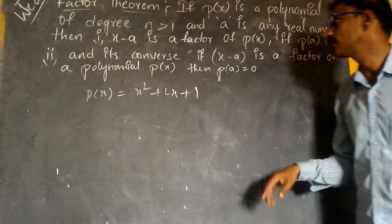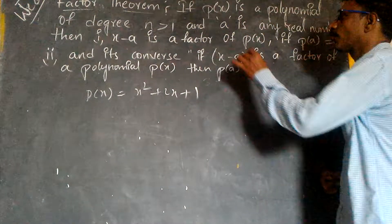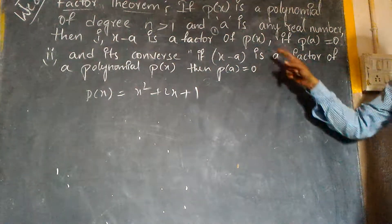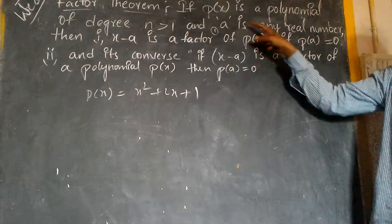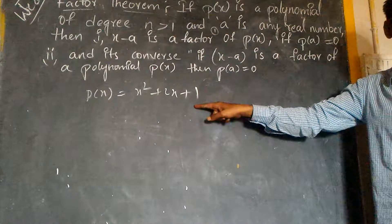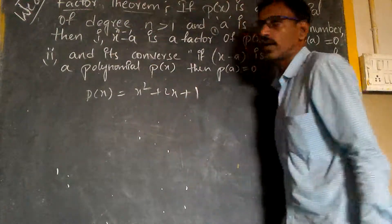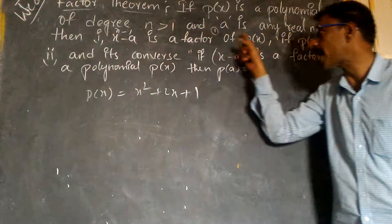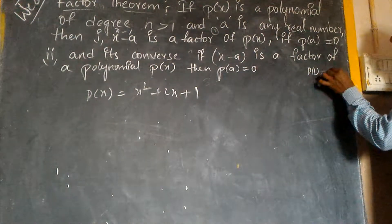The degree is greater than 1. And let a be some real number. I would like to take 1 here. Then x minus 1 is a factor of p of x. If x minus 1 is a factor of p of x, then p of 1 must be 0. Let us check it out.